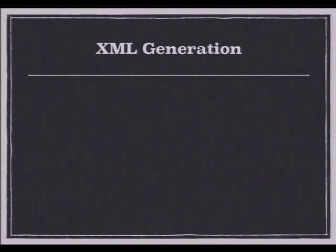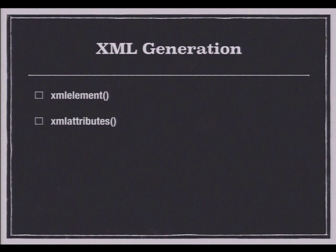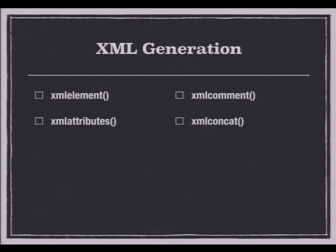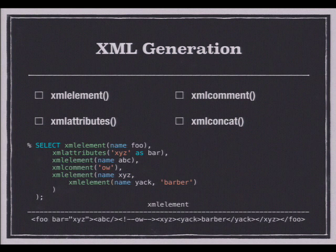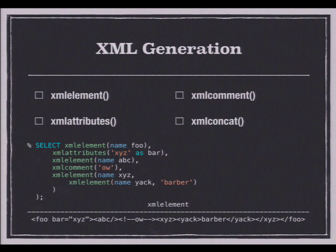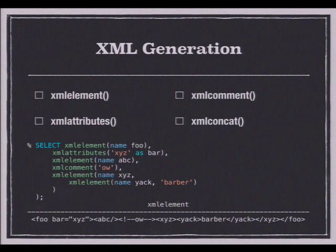There are a whole slew of XML generation functions in Postgres. XMLElement will create an XML element. XMLAttributes allows you to create one or more attributes of an element. XMLComment and XMLConcat allow you to add comments or concatenate XML values. Here's a quick example using nested calls of these functions — we're creating an XML element named foo with an attribute named bar with a value of XYZ, nested elements, a comment, and it creates a nice XML string.